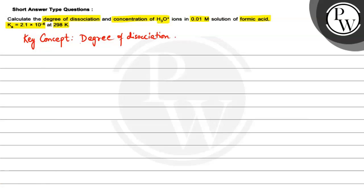First we will write this reaction. So what happens is that we have HCOOH and this will break into H plus plus HCOO minus.